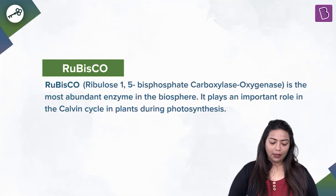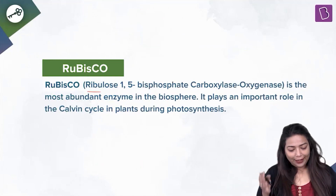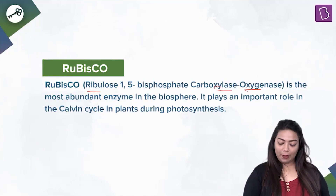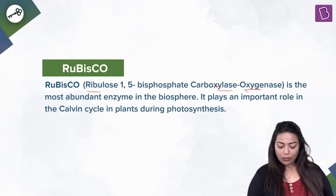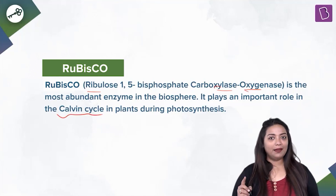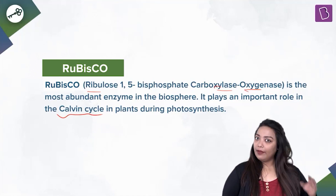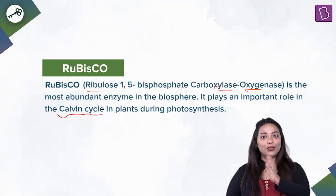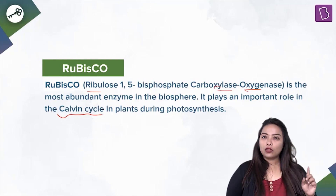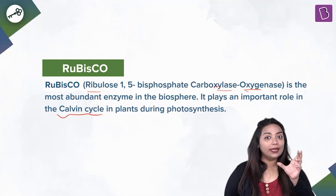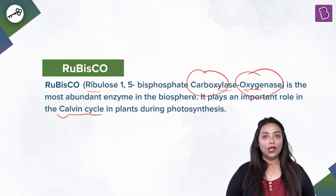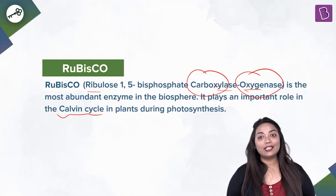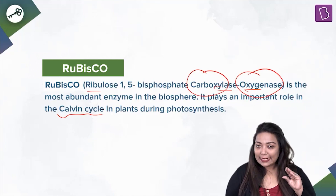Please note: RuBisCO — ribulose 1,5-bisphosphate carboxylase oxygenase — is the most abundant enzyme in the biosphere and plays an important role in the Calvin cycle in plants during photosynthesis. RuBisCO has a dual nature: carboxylase and oxygenase. It fixes carbon dioxide, but at the same time, it also has a tendency to fix oxygen if carbon dioxide is very, very limited.